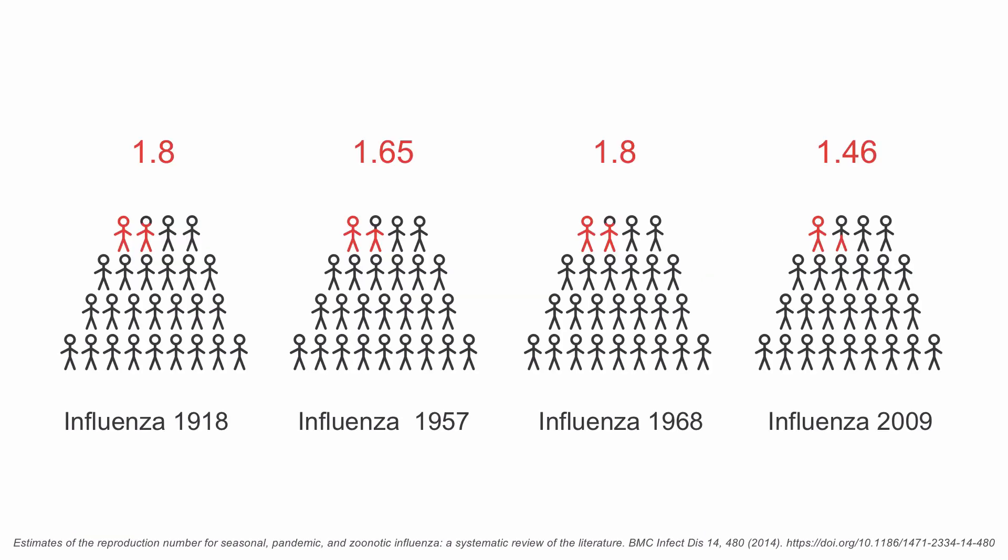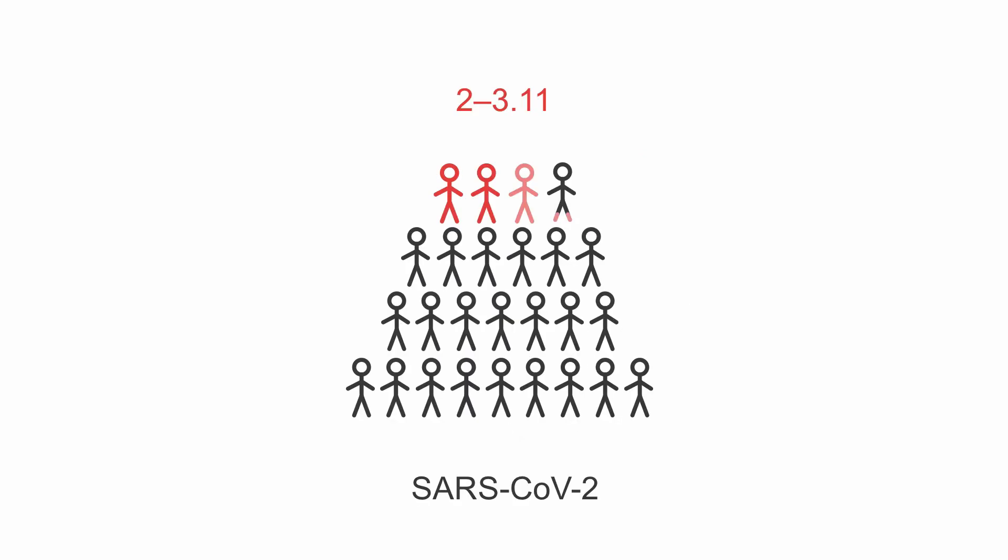A patient with influenza will infect, on average, between 1.4 and 1.8 other individuals. Someone who's infected with SARS-CoV-2, who has COVID-19, the disease, will infect between 2 and 3.1 other individuals.